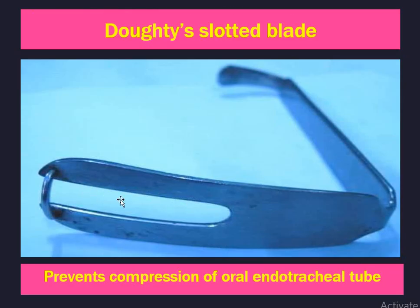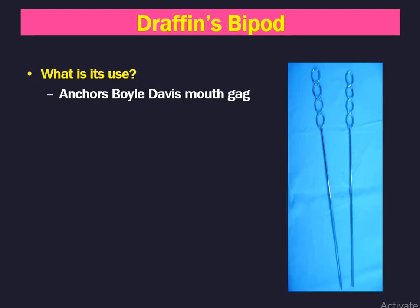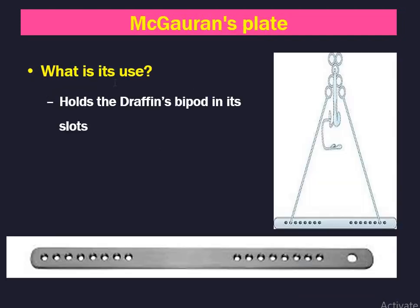The Doughty slotted blade prevents compression of the oral endotracheal tube. This is Draffin's bipod, which anchors the Boyle-Davis mouth gag. Mclvor's plate holds the Draffin's bipod in its slots — this is the Mclvor's plate with different slots. It holds the Draffin's bipod, and the Draffin's bipod anchors the Boyle-Davis mouth gag.